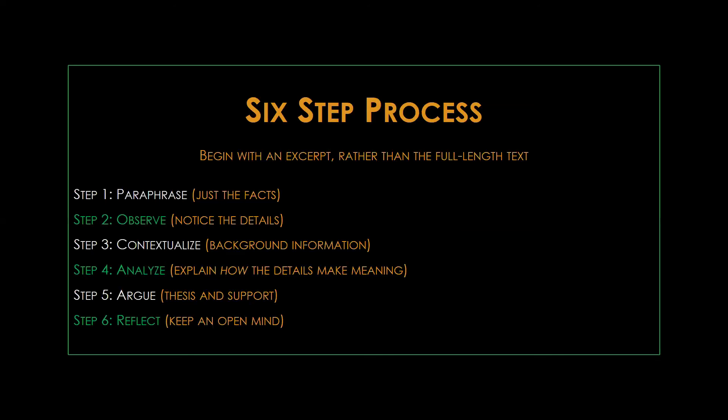Step six is reflect. Go back through the text, and identify elements that your interpretation doesn't fully account for. What did you leave out? What do you still find confusing? What do you wonder about? This last step reminds you to keep an open mind with your interpretations, and to not become blinded by your own perspective. And it also might suggest new ideas or connections you hadn't thought of previously.